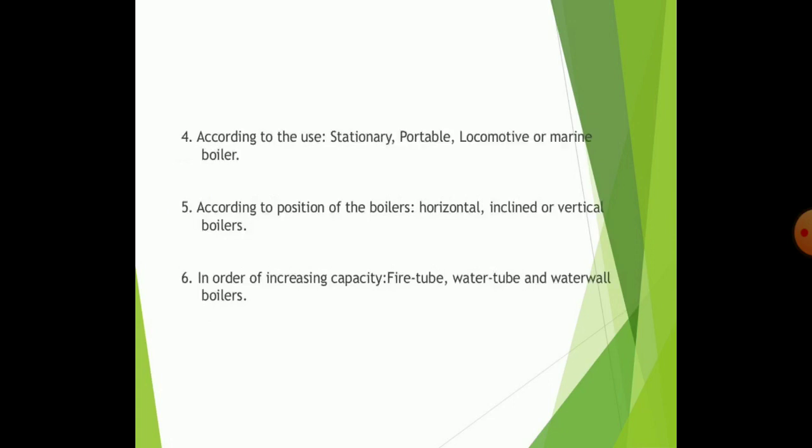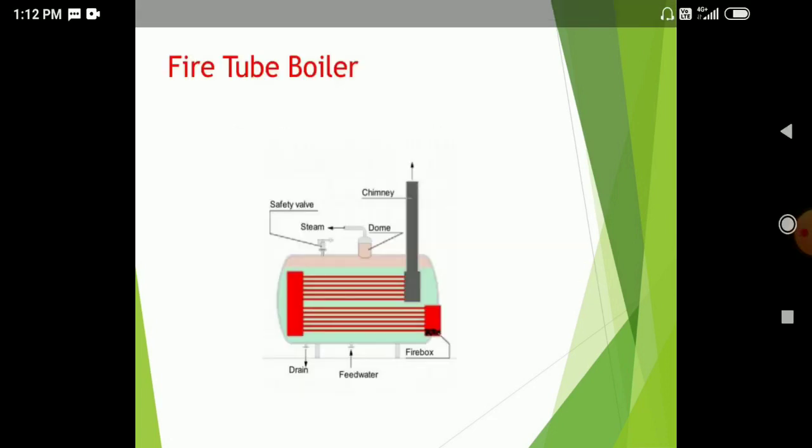According to their use, boilers are classified as stationary, portable, and locomotive boilers. According to the position of the boiler, they can be horizontal, inclined, or vertical. In order to increase capacity, fire tube, water tube, and water wall boilers are the recognized types.